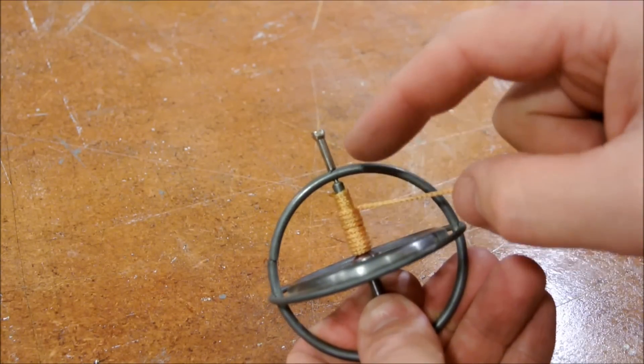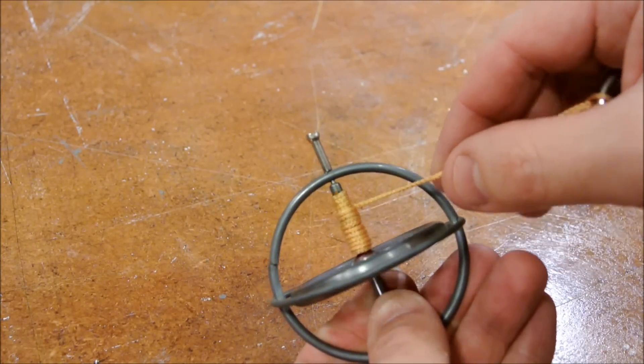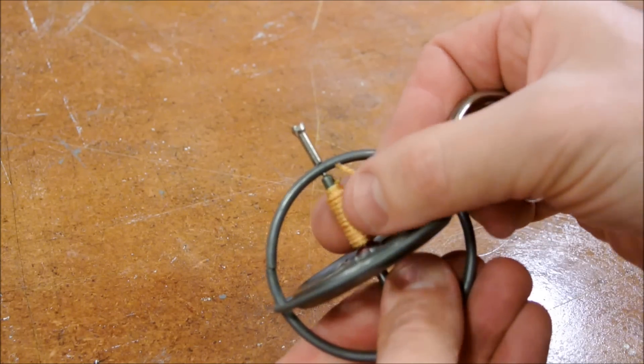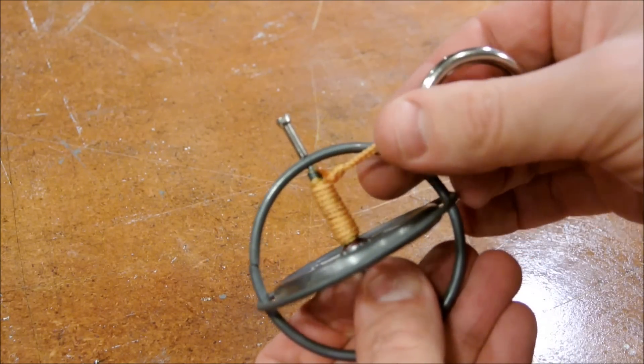You want to wrap it really nice and neatly, two passes, and so that on the end of your second pass, it ends perfectly at the knot.